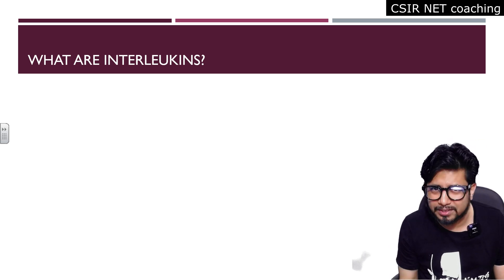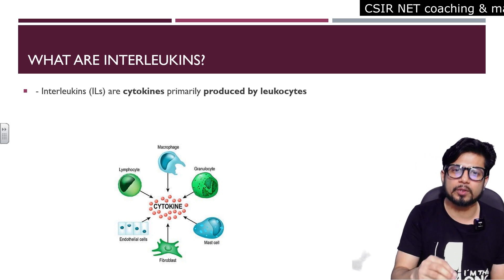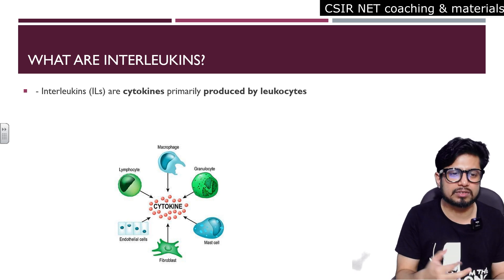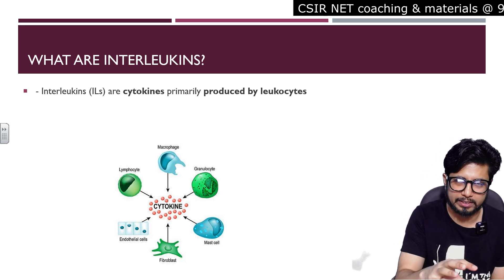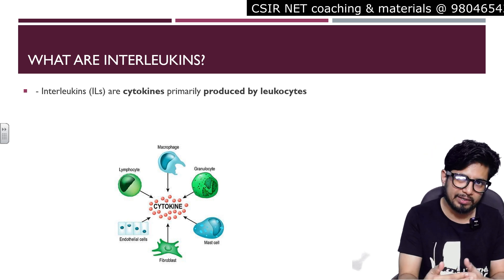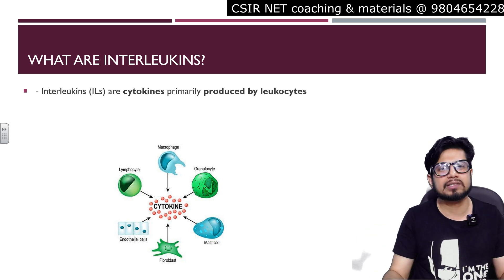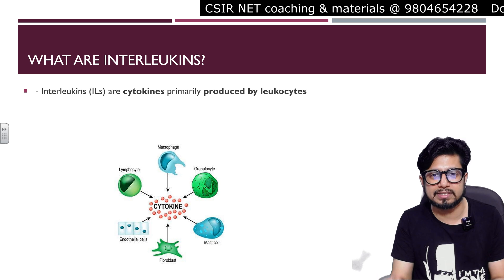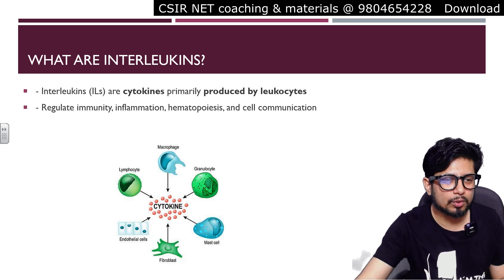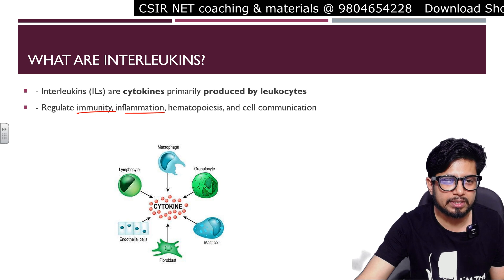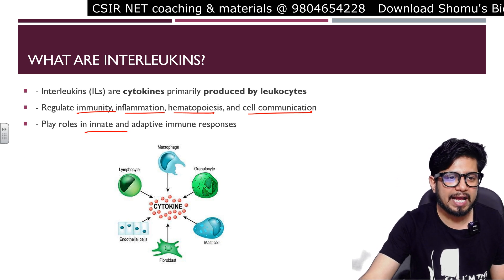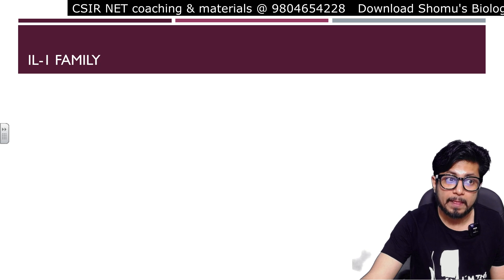What are interleukins? Interleukins are cytokines primarily produced by leukocytes, or white blood cells, of our body — white blood cells like macrophages, granulocytes, lymphocytes, and mast cells, as well as fibroblasts. These chemical factors cause the immune system to get regulated, activated, or deregulated. Some cytokines are known as chemokines, which help in cellular migration. Interleukins regulate immunity, inflammation, hematopoiesis (the growth of blood cells), and cell communication, playing roles in both innate and adaptive immune responses.